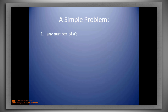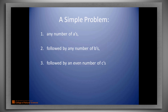The string could begin with any number of A's, including none. That was to be followed by any number of B's, including none. And that was to be followed by an even number of C's. Thus, the structure was some number of A's, followed by some number of B's, and then an even number of C's.